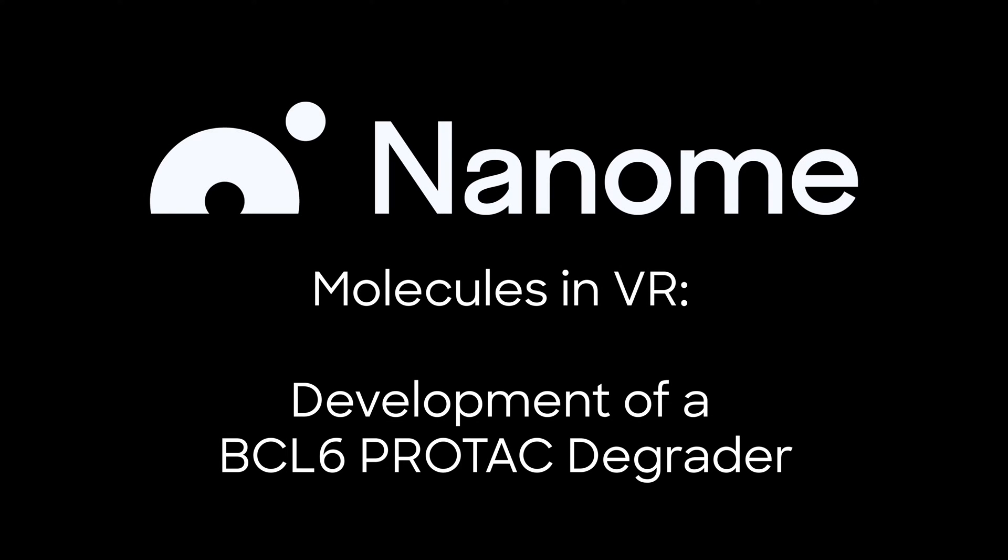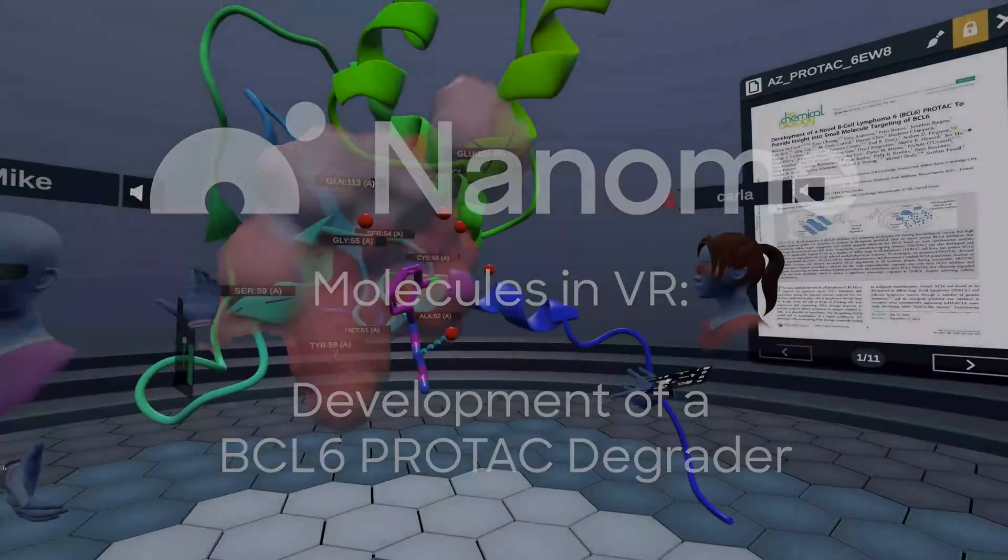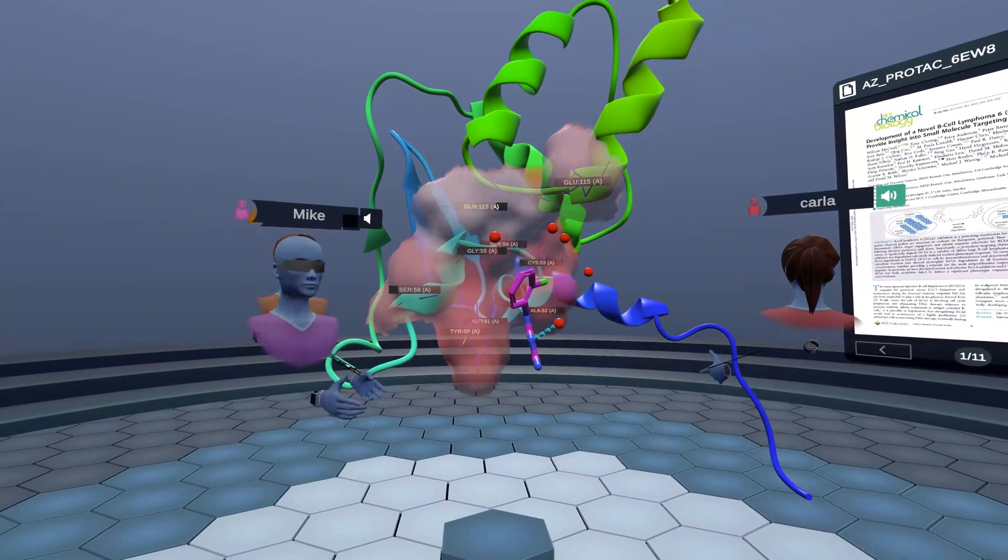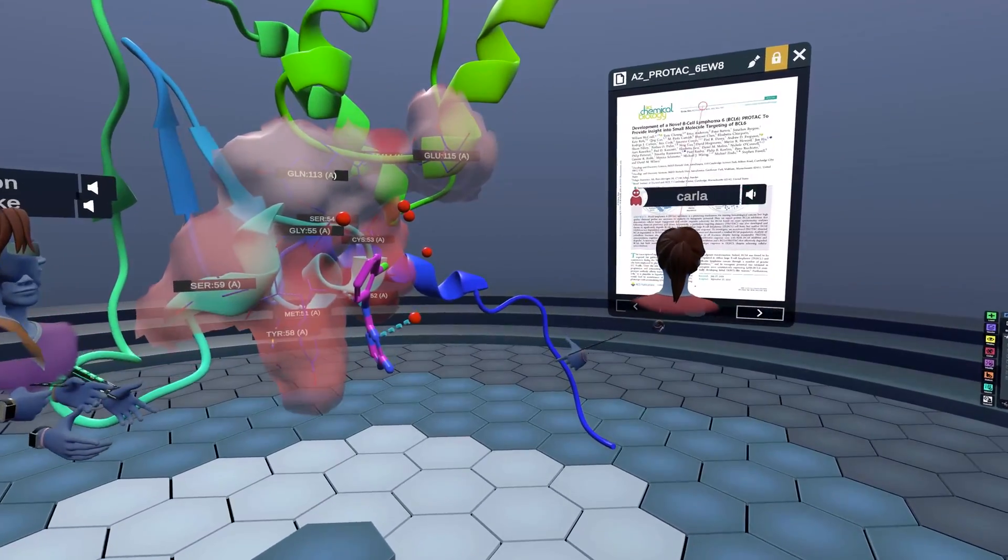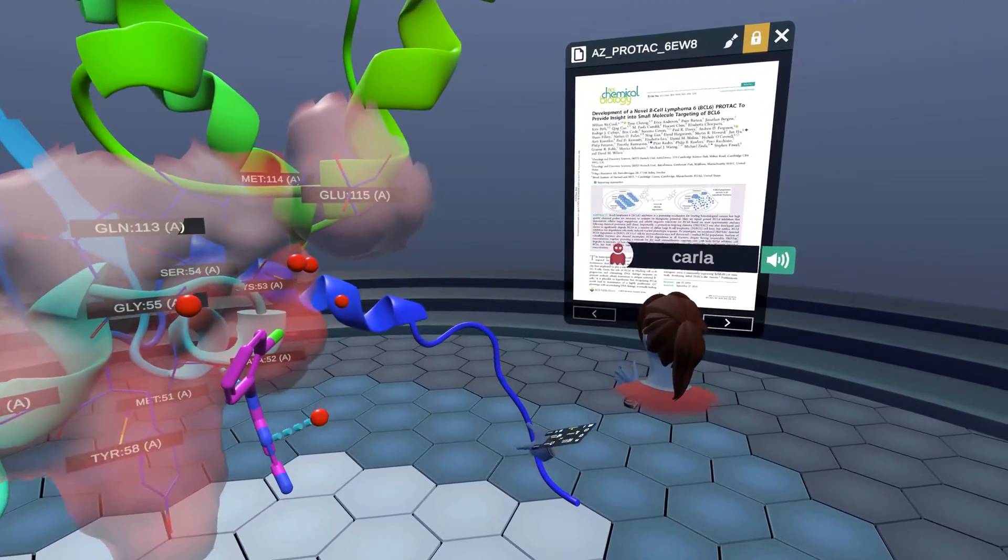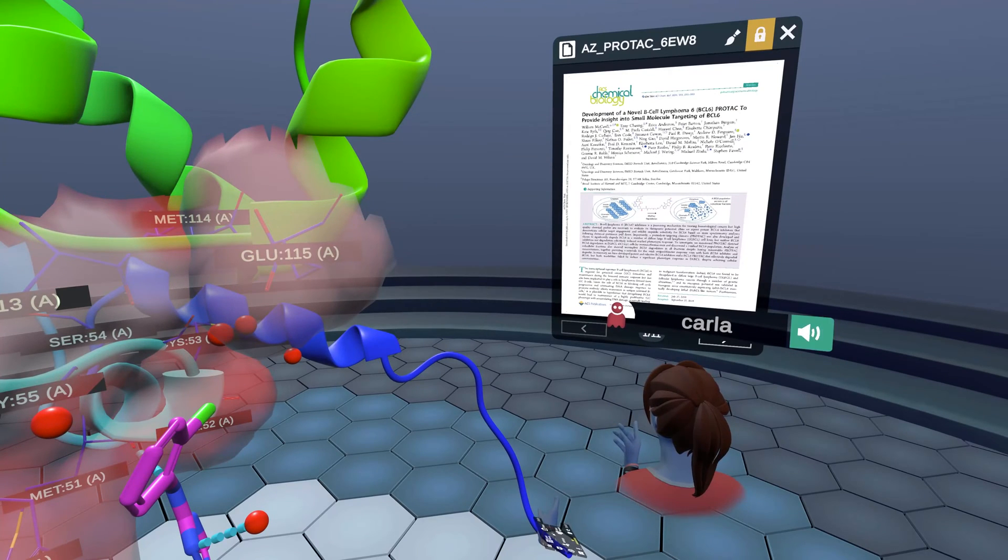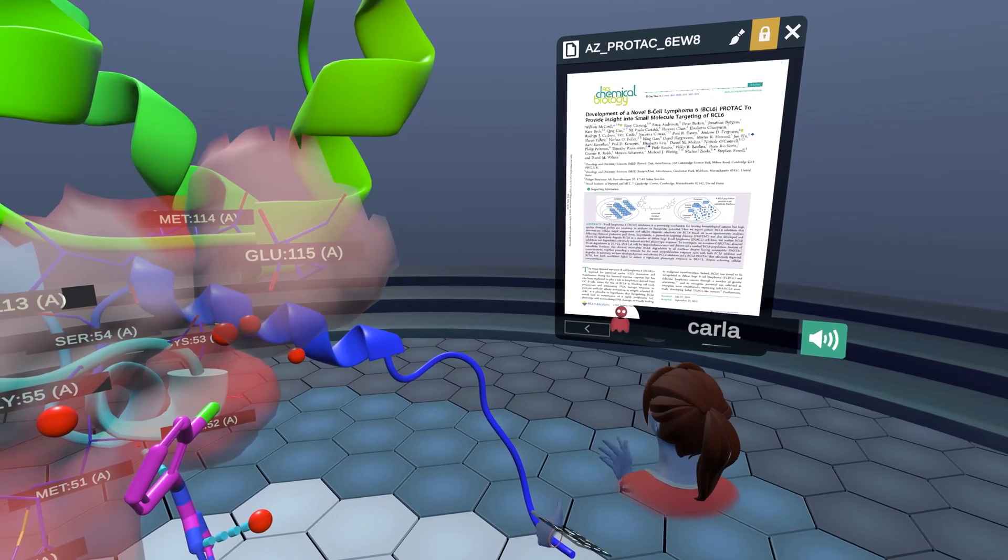Hello everyone, and welcome to Nano. Today I am joined by Mike and John. We're going to be discussing an ACS Chemical Biology paper that came out this year on development of novel B-cell lymphoma, or BCL-6, PROTAX and inhibitors that provide insight into small molecule targeting of BCL-6. This work was done by AstraZeneca.